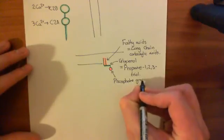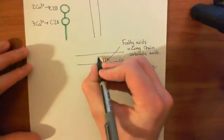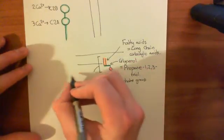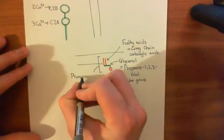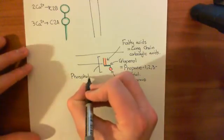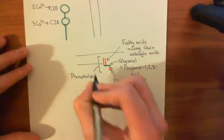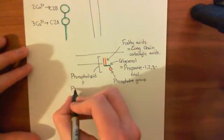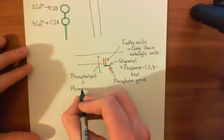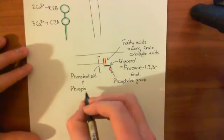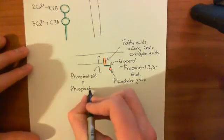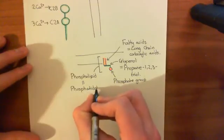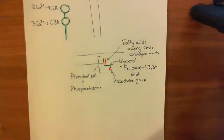The whole structure together — glycerol backbone, fatty acids, and phosphate head — is known as a phospholipid. The old name for a phospholipid, which biochemists occasionally use, is a phosphatidate molecule. Although people generally don't refer to normal phospholipids as phosphatidate molecules, knowing that name is useful for understanding the names of the modified phospholipids.